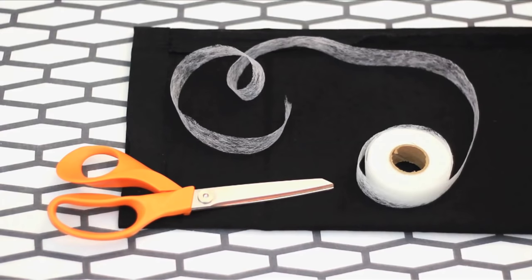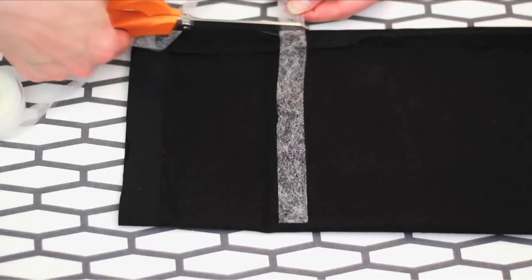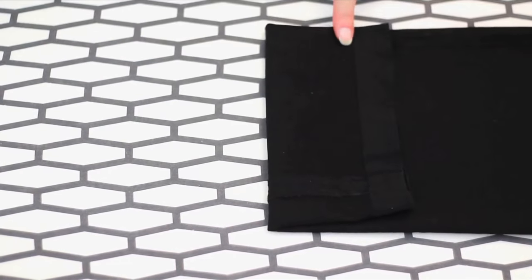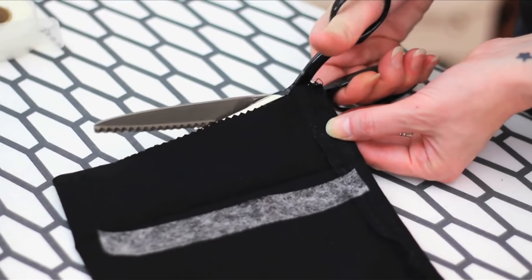Cut pieces of hem tape that fit the width of one side of pant. If you have a lot of excess pant leg, you can cut it off. Using pinking shears will prevent fraying.